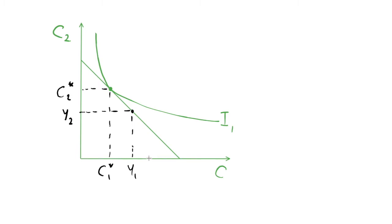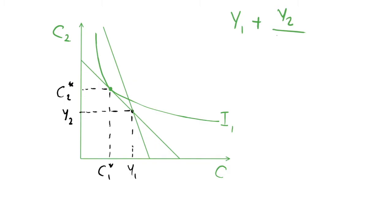Now let's think about what happens when we change the interest rate. Increasing the interest rate has the effect of rotating the budget line to make it steeper. To understand why, recall the intertemporal budget constraint: the present value of income is y1 plus y2 over (1 plus r). Increasing r changes the term y2 over (1 plus r), and this is reflected in the pivot of the budget line.